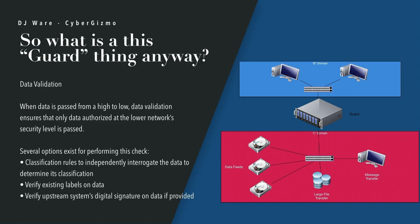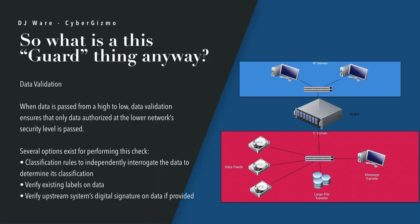When data is passed from high to low, data validation ensures that only the data authorized at the lower network security level can be passed. You can have data marked for the B domain exist on the C domain — and if that data has not been modified, and you ensure nobody inadvertently added C-level data to it, it can go back down onto the B domain usually without a human review as long as it's been validated not to have changed. If it has changed, it typically goes through a review process. Options include using classification rules to independently interrogate the data, verifying existing labels on the data, and verifying digital signatures — and today digital signatures are required on most things.